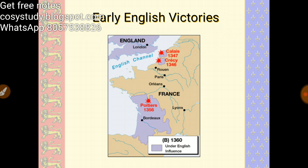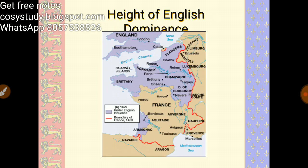Here on the map you can see the early British victories — Calais in 1347, Crécy in 1346, and Poitiers in 1356. At the height of English dominance, around 1429, you can see how much territory in France was under English control. There were ups and downs throughout this war.